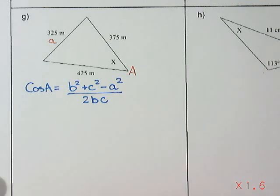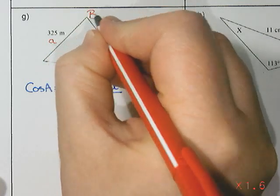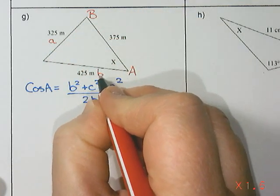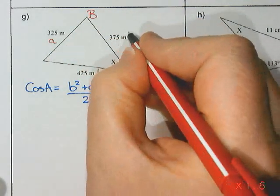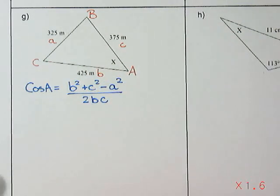Now, B and C, it's your choice where you want to put them. I might put angle B on the top, which means side B is down here across from that, and then angle C is over here, and then side C would be the 375.